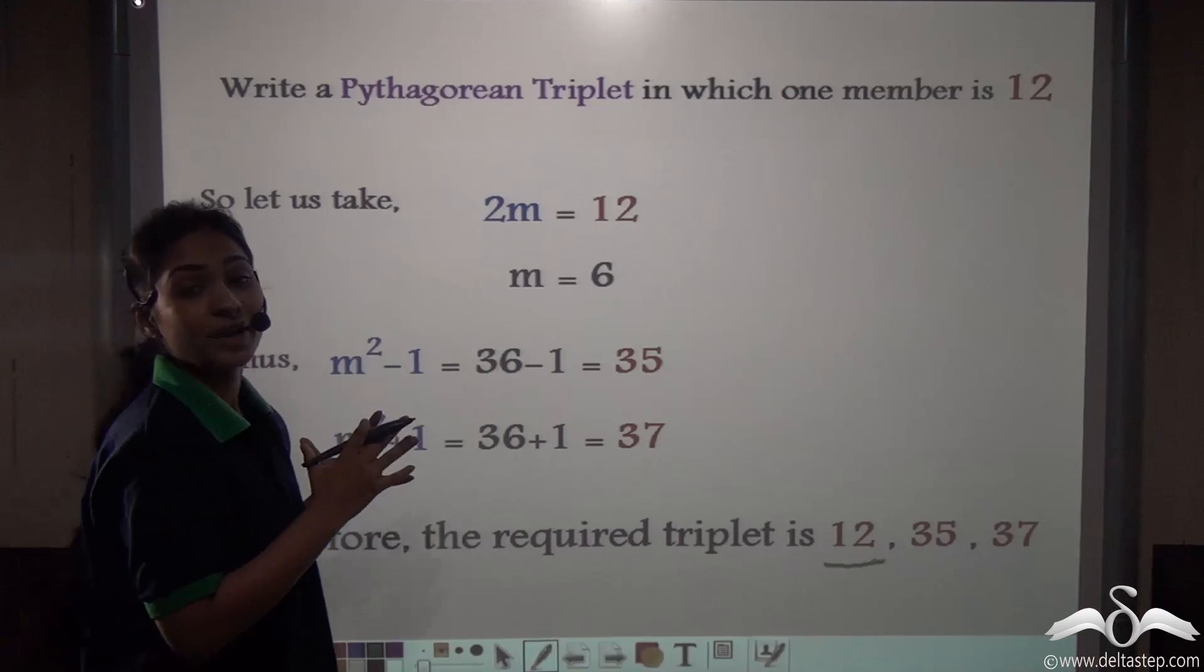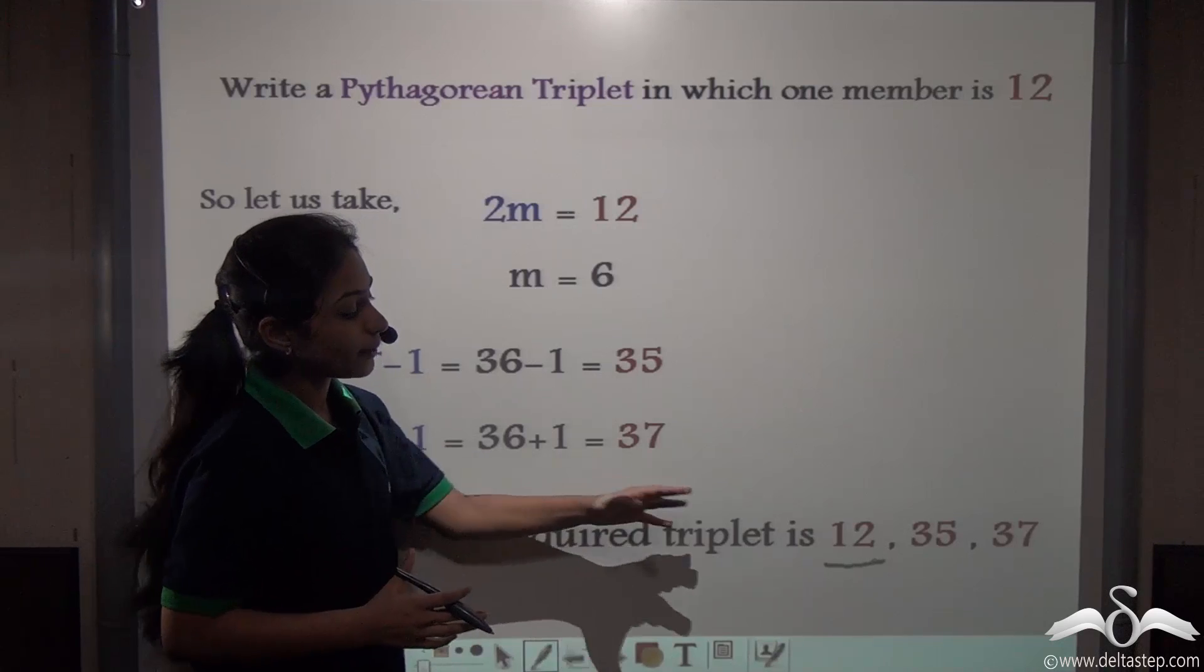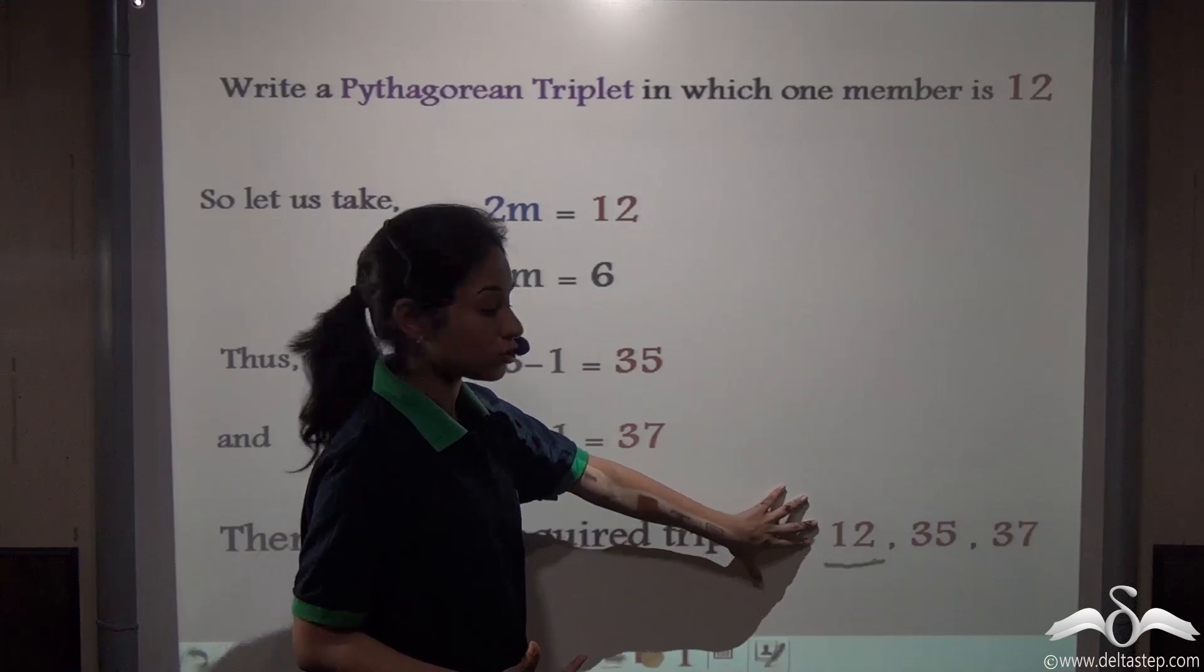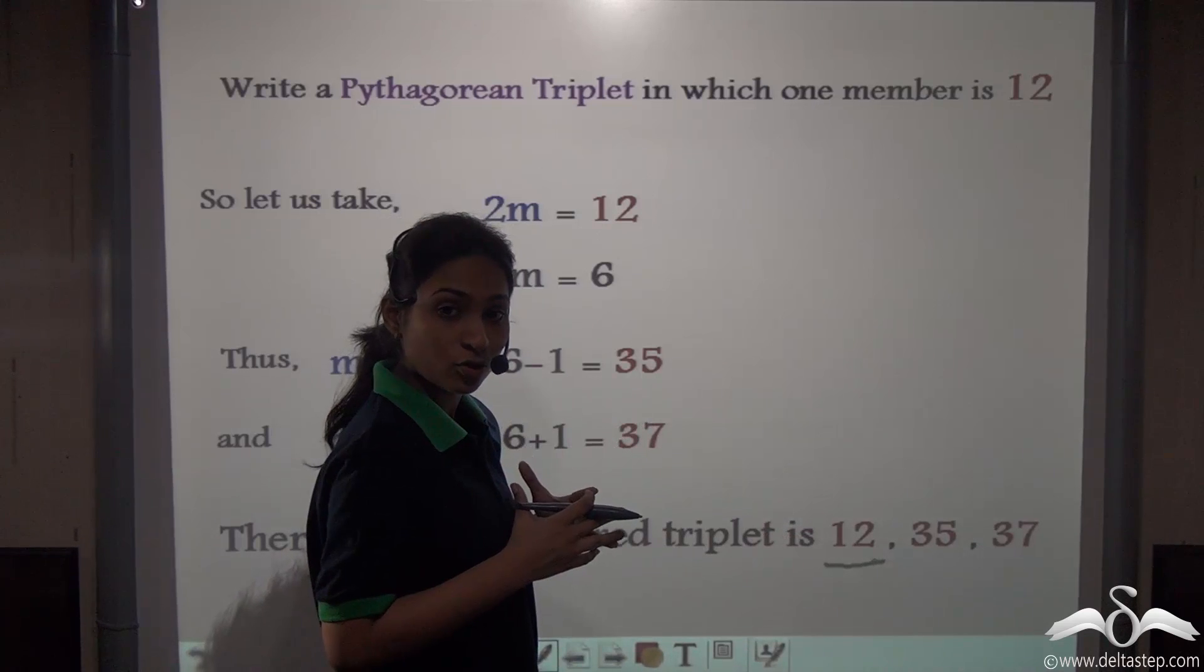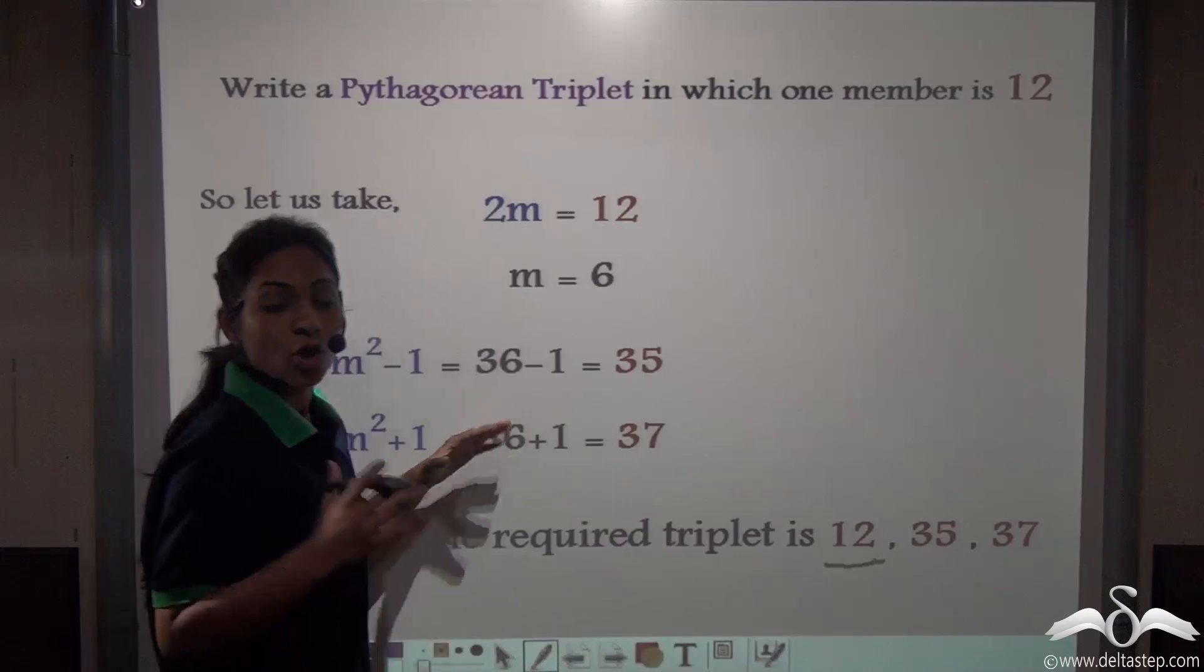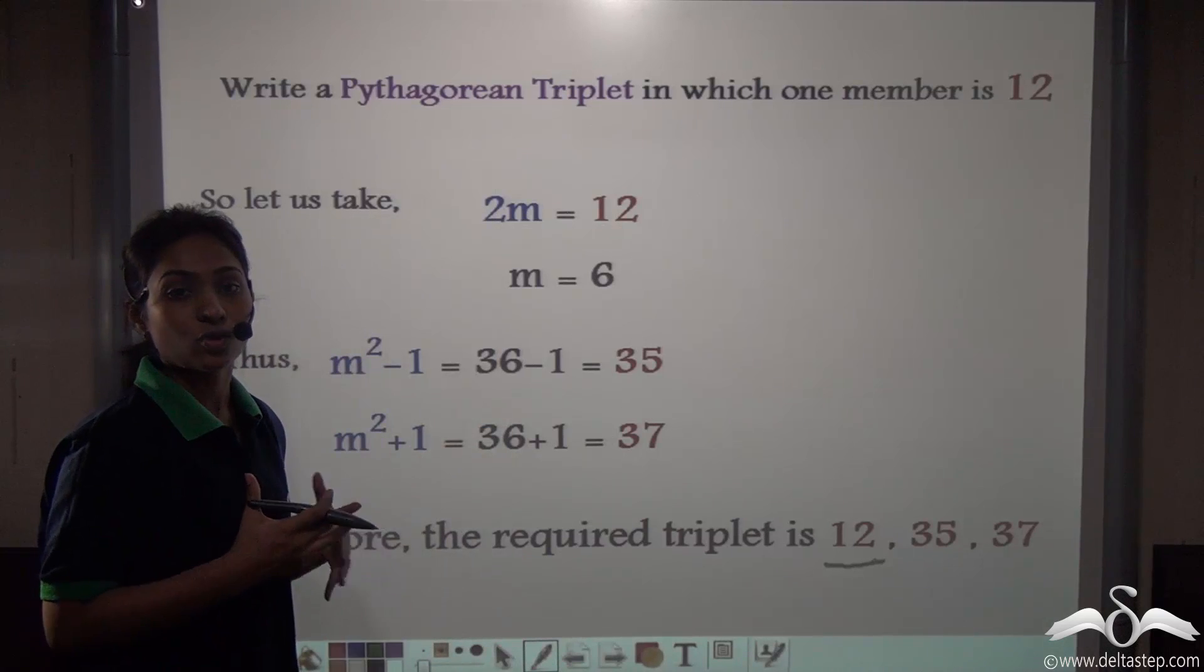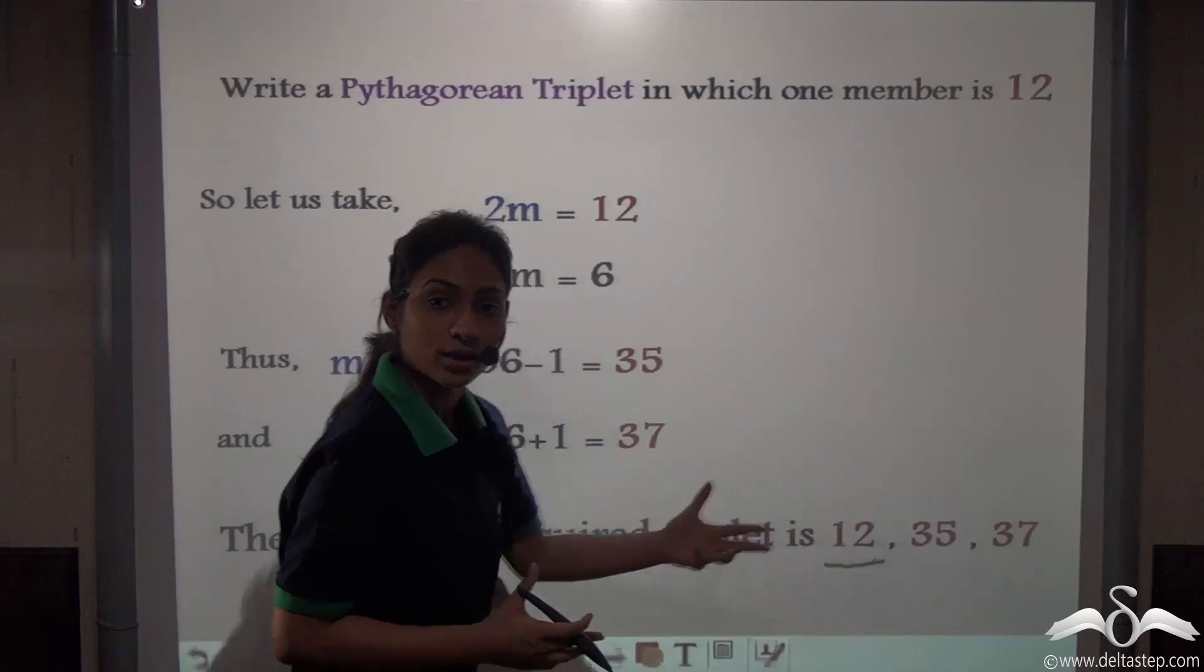Well remember that you cannot find out all the Pythagorean triplets using this method. Why? Because there may be other Pythagorean triplets also where 12 is the second member or the third member, or you can say the largest member in the group. So here we have taken out where 12 is the smallest number. You may get other Pythagorean triplets also where 12 is the second or third number.